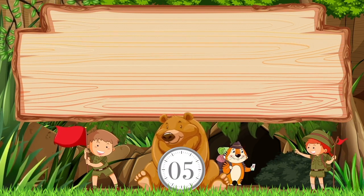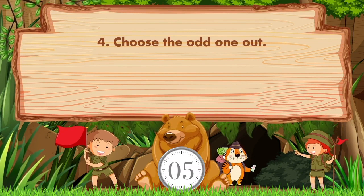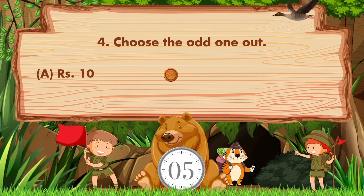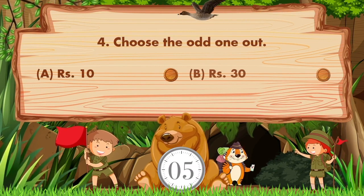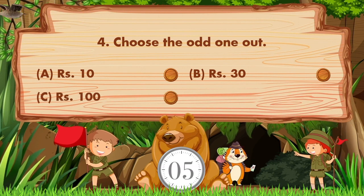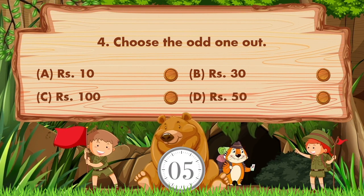Choose the odd one out. Option a is 10 rupees, option b is 30 rupees, option c is 100 rupees, option d is 50 rupees.